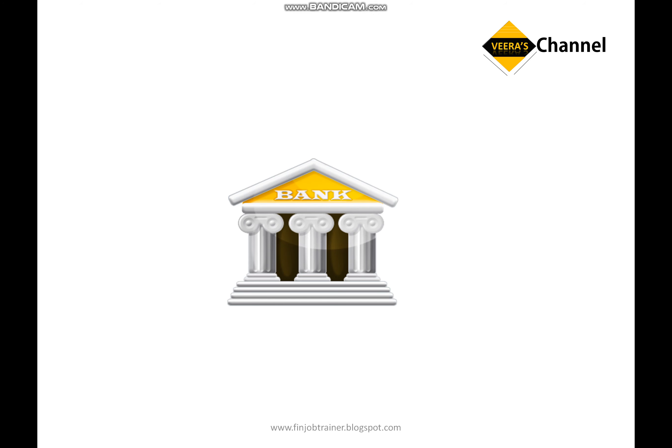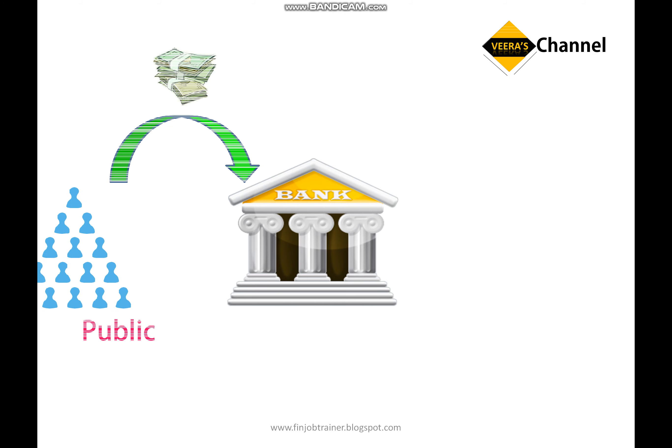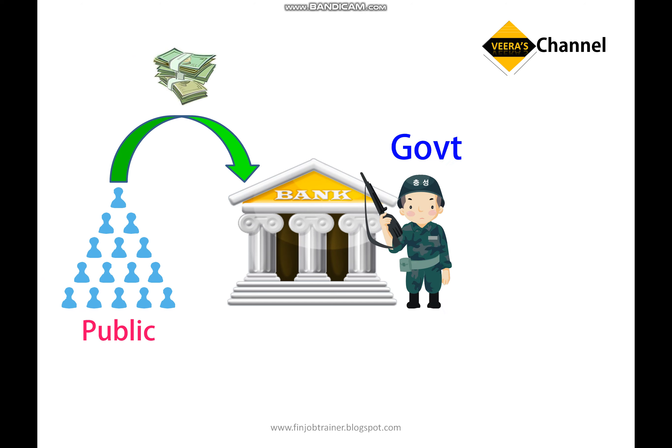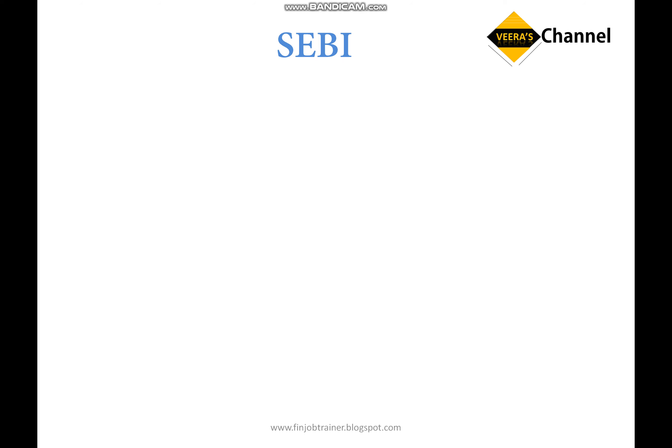Now we have understood RBI. The question is: why do we require any organization like RBI to control and regulate other banks? What is the need for RBI? People like us — the public — deposit their money in banks. Whenever public money is involved, it becomes the government's responsibility to safeguard that money. That is why the government has established RBI — to control and regulate other banks.